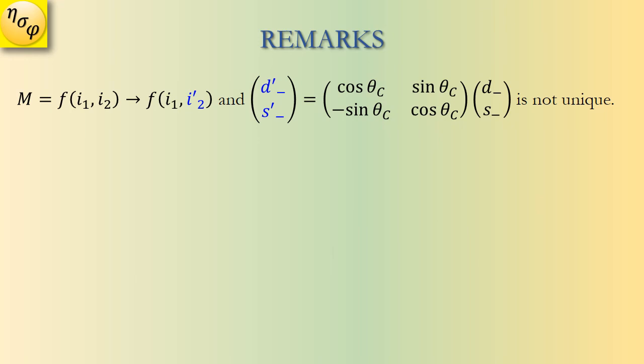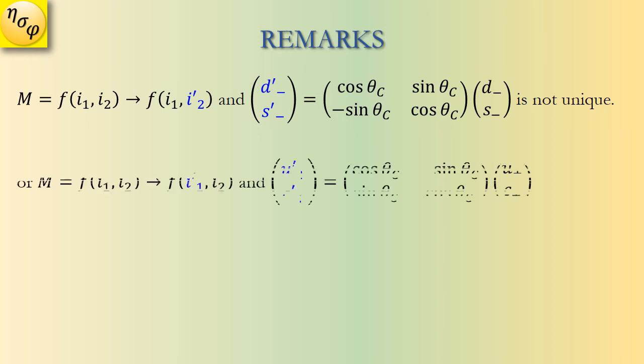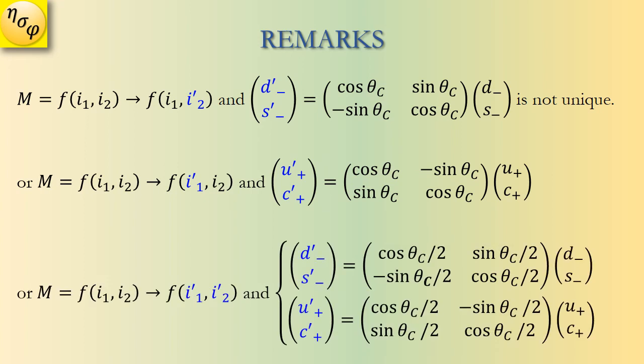For some remarks: first, our i2 transformation is not unique — we can transform i1 instead of i2, or we can transform both i1 and i2 with the total angle being the Cabibbo angle.